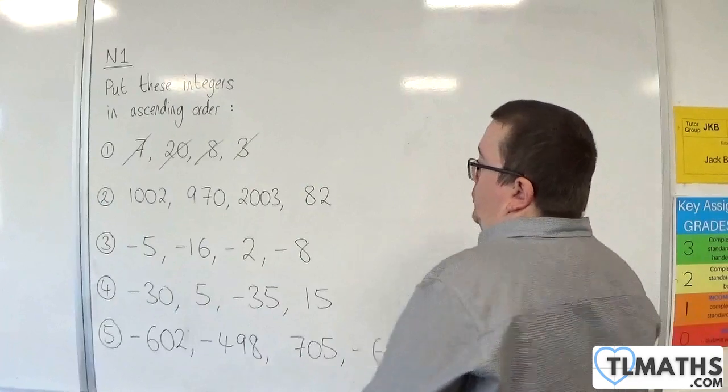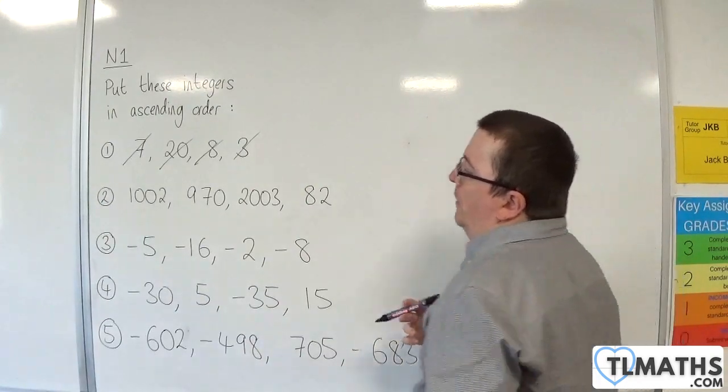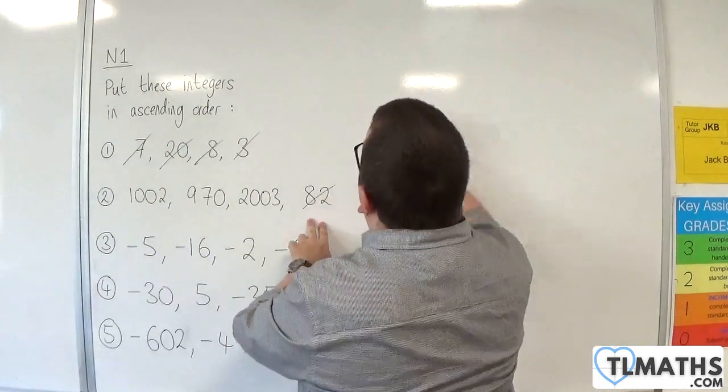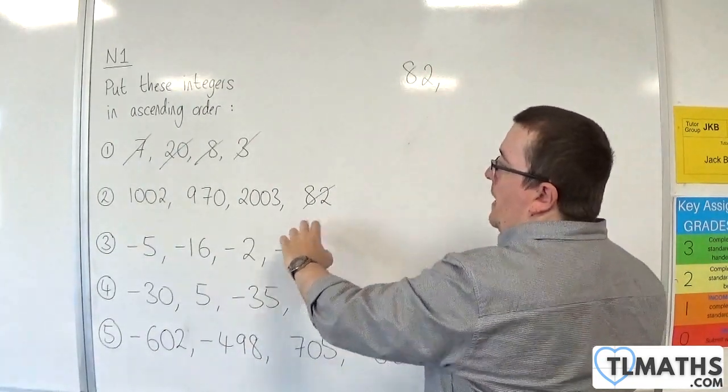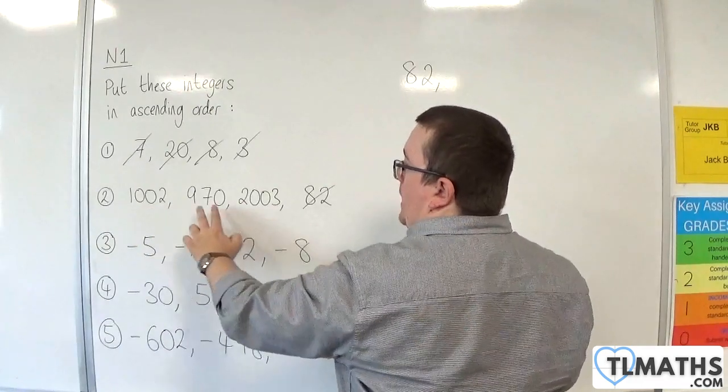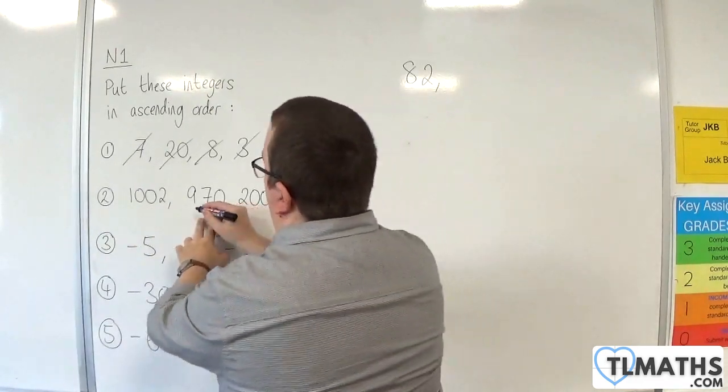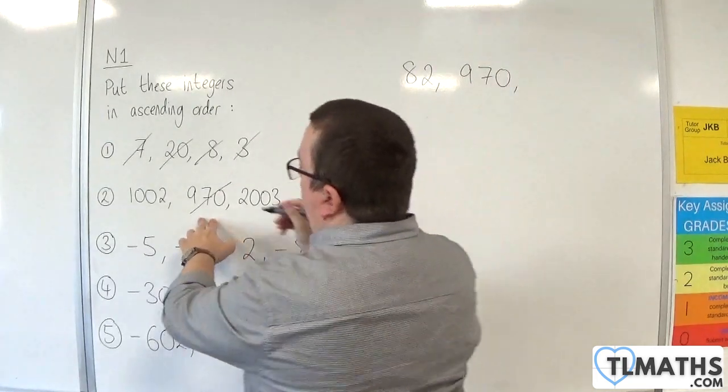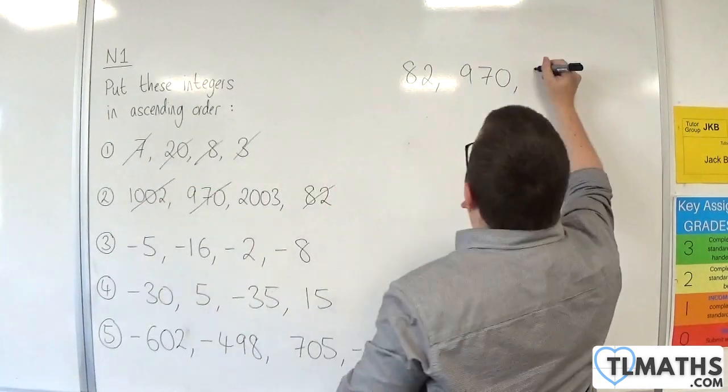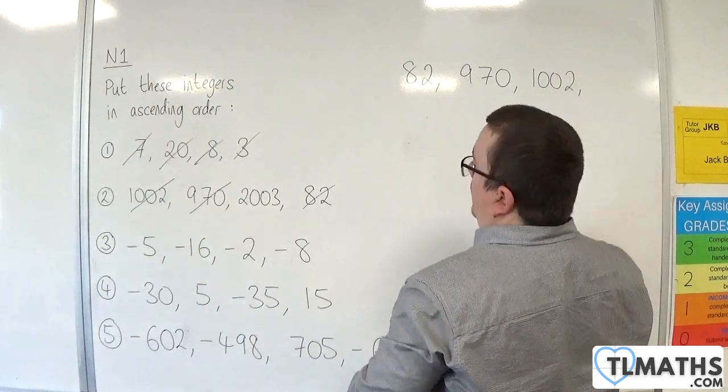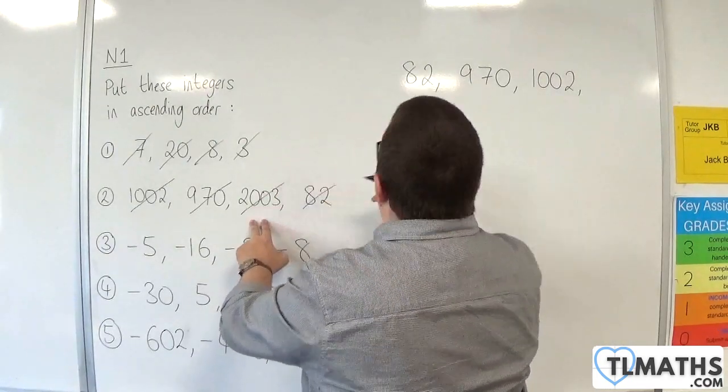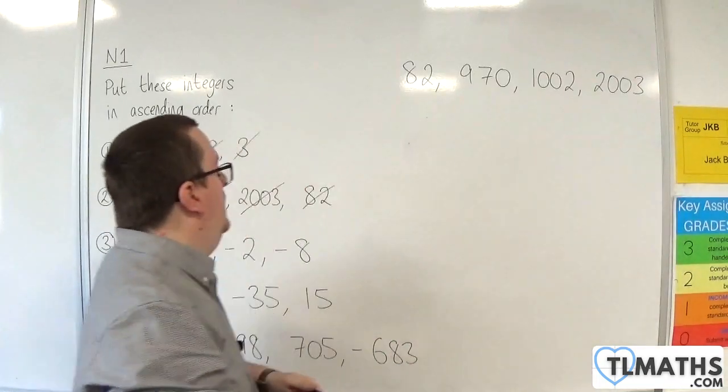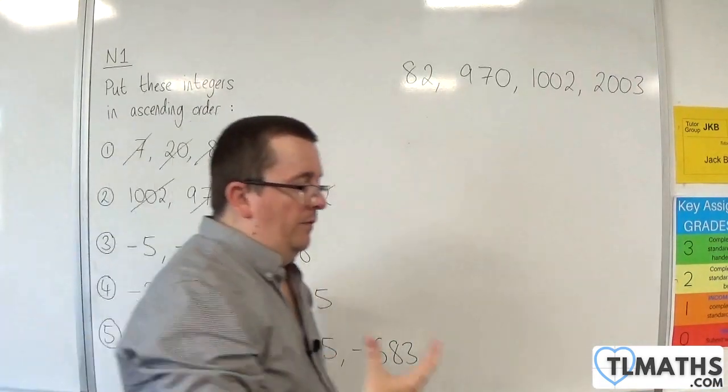Number 2. Again, find the smallest number first, which is 82. Then the next smallest will be 970, then 1,002, and then 2,003. So they are now in order.